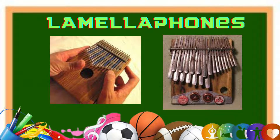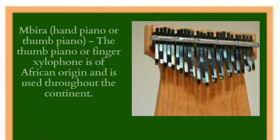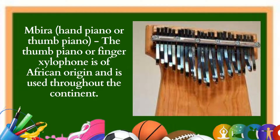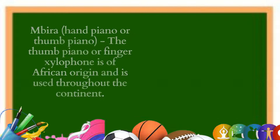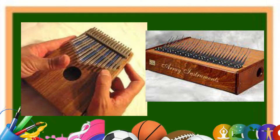C: Lamellophone. One of the most popular African percussion instruments is the lamellophone, which is a set of plucked tongues or keys mounted on a sound board. It is known by different names according to region, such as bira, karimba, kisange, and likembe. The thumb piano or finger xylophone is of African origin and used throughout the continent. It consists of a wooden board with attached staggered metal tines and an additional resonator to increase volume, played by plucking the tines with the thumbs.